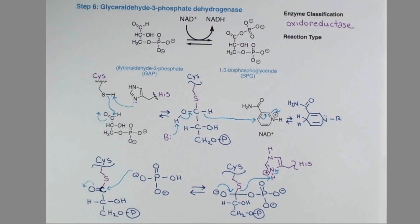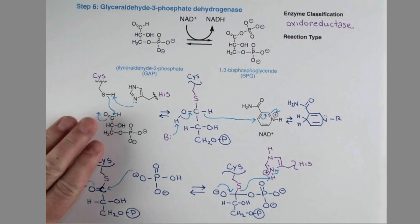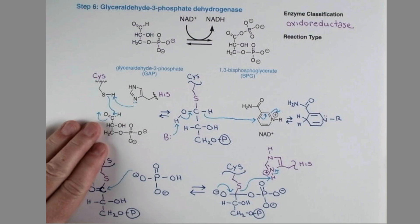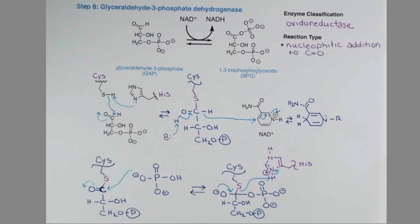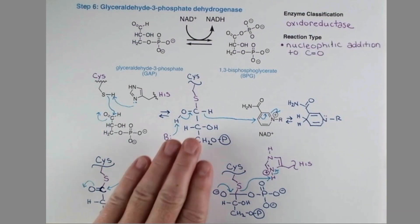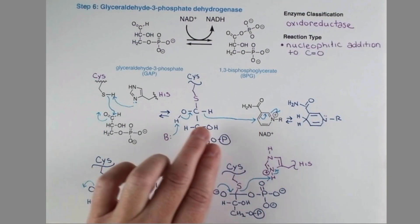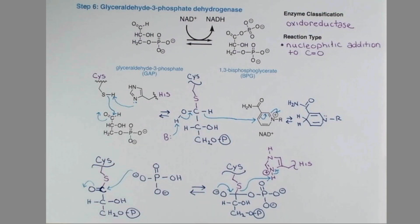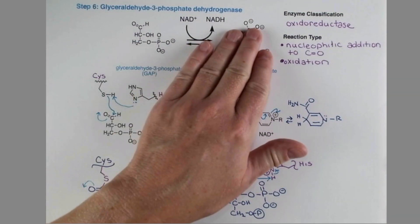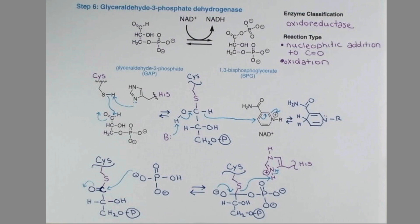Let's break down the reaction types we saw throughout this mechanism. Overall, this is an oxidation. But in the first step, we have nucleophilic addition to a carbonyl. Since we're losing electrons from this substrate along the way, that's oxidation. Remember that our NAD+ is reduced in the process. Finally, we convert our thioester into the phosphate — that's nucleophilic acyl substitution.